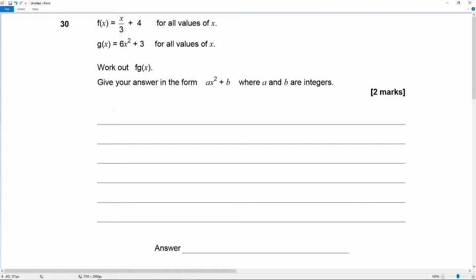Okay so fg of x, it's a basic composite function. It means f of g of x. So whatever g of x is, that goes in the f of x. So that's equal to f of 6x squared plus 3.